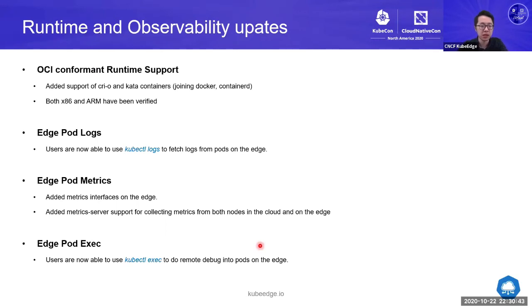For runtime and observability updates, this year we supported almost all mainstream OCI-conformant runtimes, including CRI-O, Kata Containers, containerd, and Docker. Both x86 and ARM architectures including ARMv7 and ARMv8 are verified. For observability, we added support to use kubectl logs to fetch logs from pods on the edge, and support to use the metrics server to collect metrics from nodes both in the cloud and on the edge. In release 1.5, we added support for using kubectl exec to access a pod on the edge from the API server in the cloud, which is very useful for developers to develop applications on the edge without going to the actual physical location.